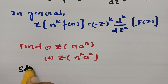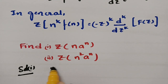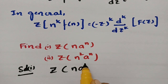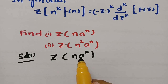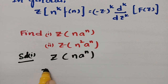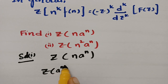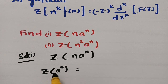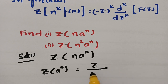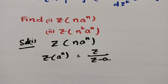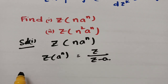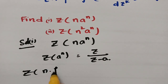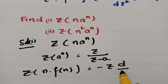For solution 1, we need the Z-transform of n·aⁿ. Here aⁿ is multiplied by n, so I am taking f(n) = aⁿ. We know that the Z-transform of aⁿ is Z/(Z−a). Since it is multiplied by n, using the formula: Z{n·f(n)} = minus z times d/dz of capital F(z).